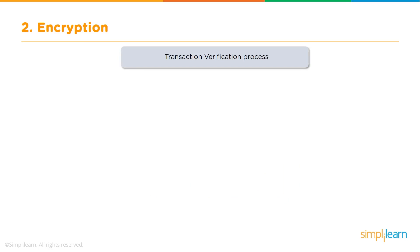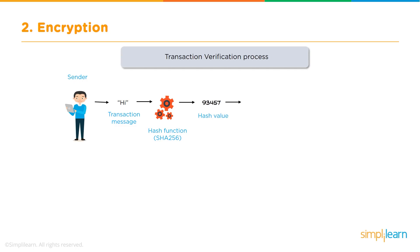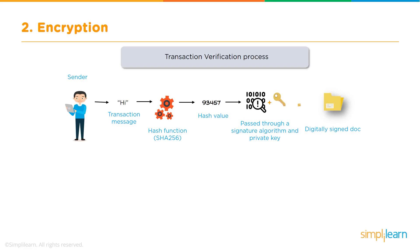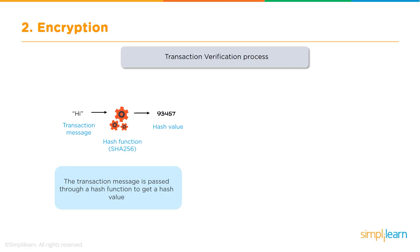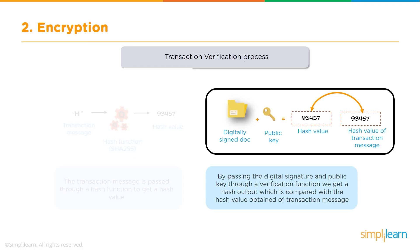Now let's look at a typical transaction verification process. Suppose a sender wants to send a message — they pass the message through a hash function and generate a hash value. After the hash value is created, it is passed through a signature algorithm and with the private key a digitally signed document is created. The original transaction message, the digitally signed document, and the public key are transmitted to the receiver. At the receiver end, the transaction message is passed through a hash function to get a hash value, and that hash value is compared with the value obtained by passing the digital signature and public key through a verification function.